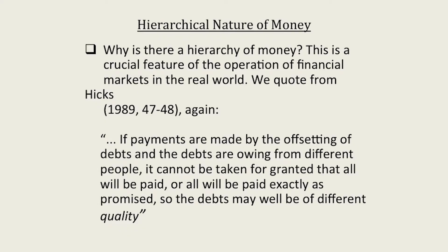The second thing is why there is a hierarchy of money, which is a crucial feature of the operation of financial markets in the real world. Quoting Hicks again: 'If payments are made by the offsetting of debts, and the debts are owing from different people, it cannot be taken for granted that all will be paid, or all will be paid exactly as promised.' So the debts may well be of different quality, and you get this hierarchy of debts — from base money, to commercial bank money, to all other promises to pay — because the debts are of different quality. Using standard notation, this is like the top end of the pyramid.